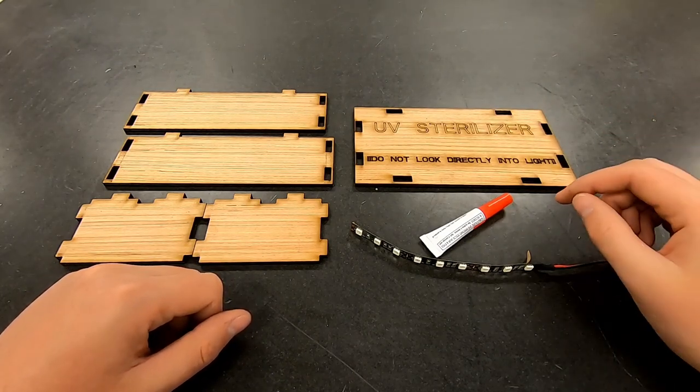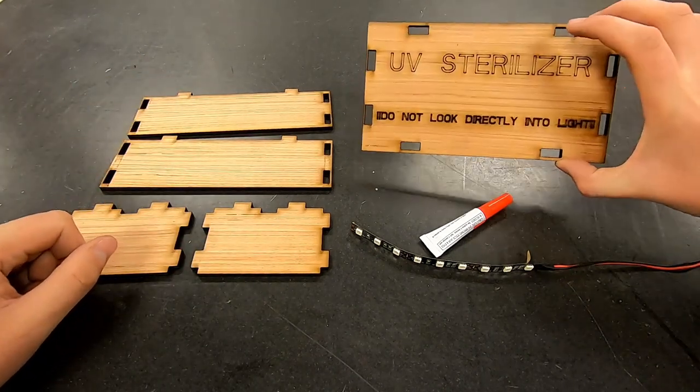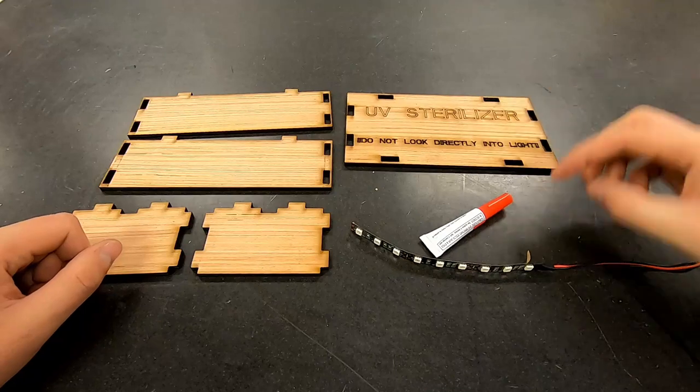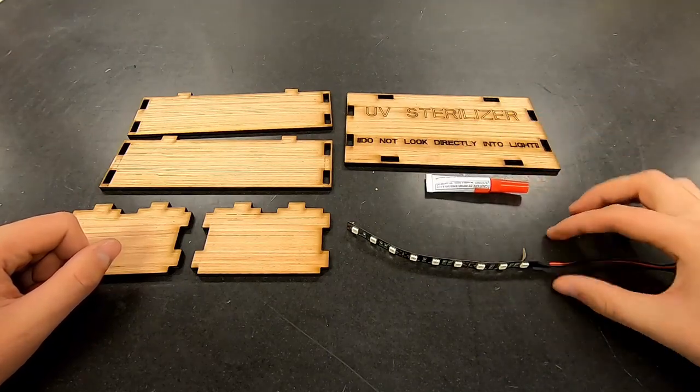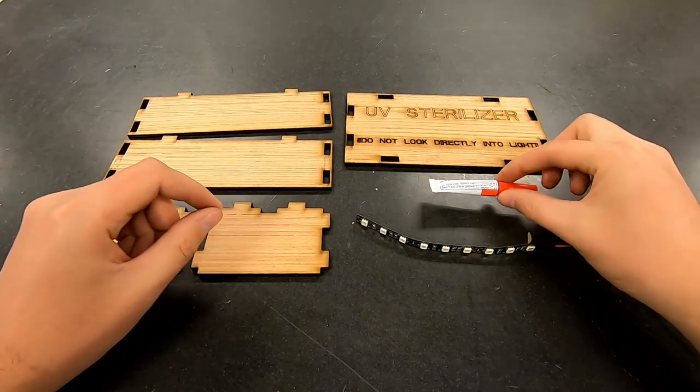So in this kit here you're going to have two short pieces, two long pieces, one top piece with all the lettering on it, some super glue, an LED strip, as well as a couple pairs of gloves that will help you keep the glue off of your fingers.